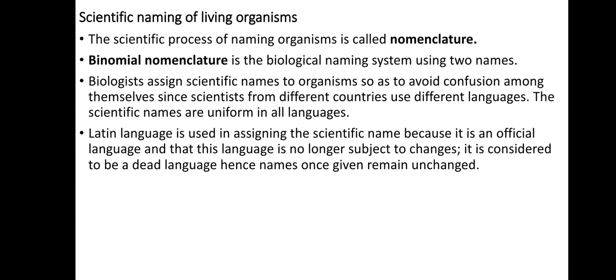The scientific process of naming organisms is what we call nomenclature. We talk specifically about binomial nomenclature, which is the biological naming system that uses two names for each organism.